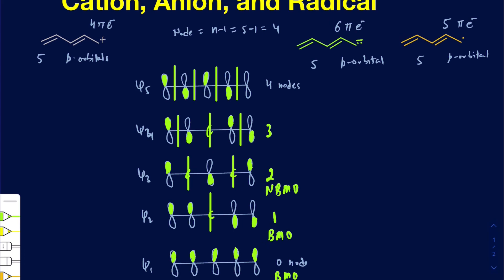For ψ4, we have more destructive interferences than constructive interferences, so that is your anti-bonding molecular orbital. And for ψ5, obviously we have more destructive interferences — destructive from here to here, destructive from here to here, destructive from here to here, and so on. More destructive interferences than constructive, so that's also your anti-bonding molecular orbital.